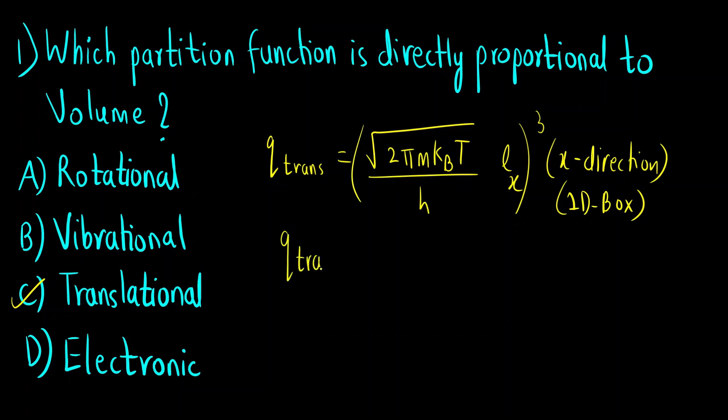So Q trans is equal to if we take the entire cube this will be Lx cube into root of 2πmkbT/h. This also will be raised to 3. Now here you can see Lx cube. This is what? This is volume.